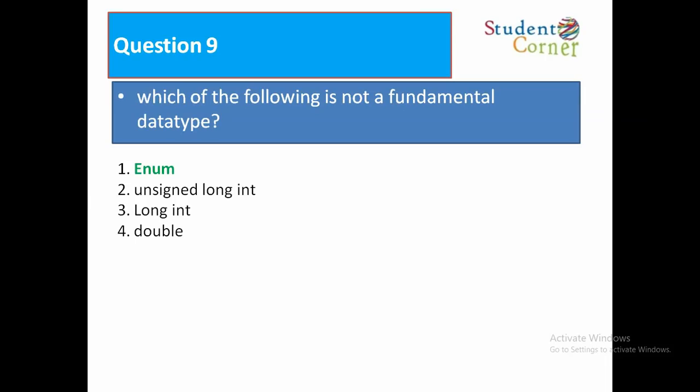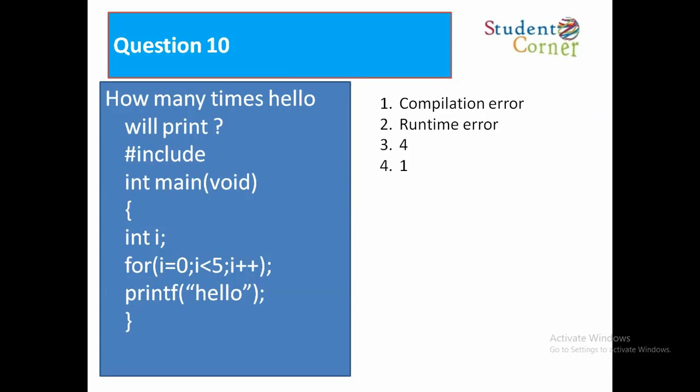Question number ten: How many times will hello print? Hash include, int main void, int i, for i equals 0, i less than 5, i plus plus, printf hello. It indicates a runtime error. Thank you.